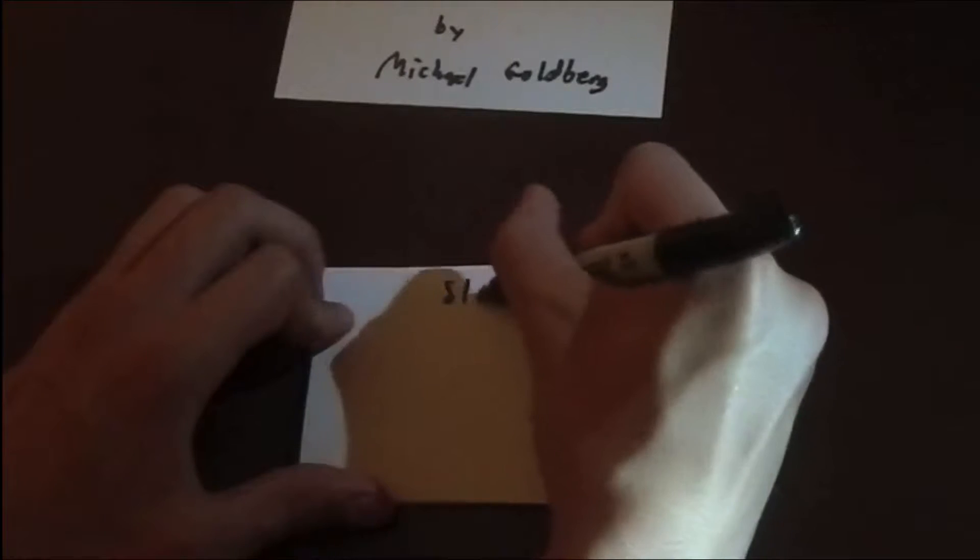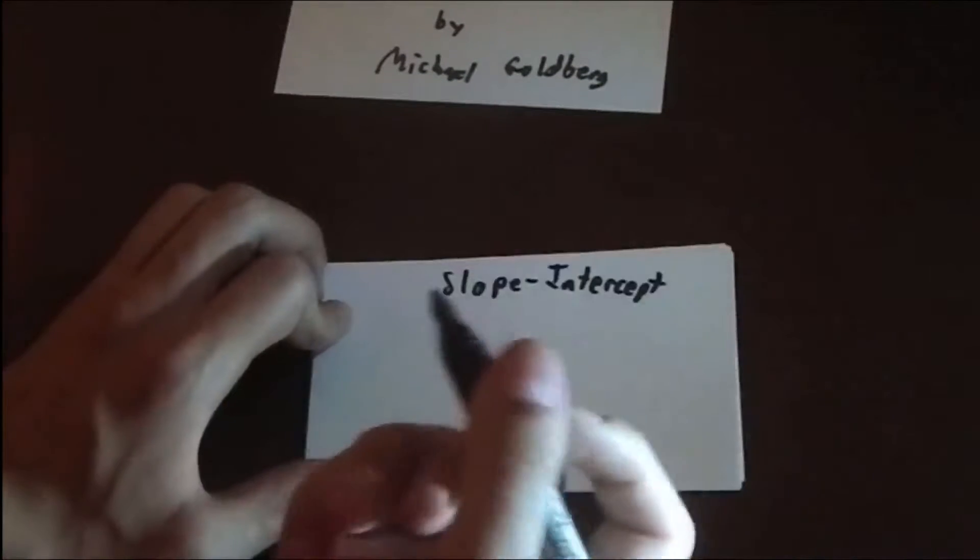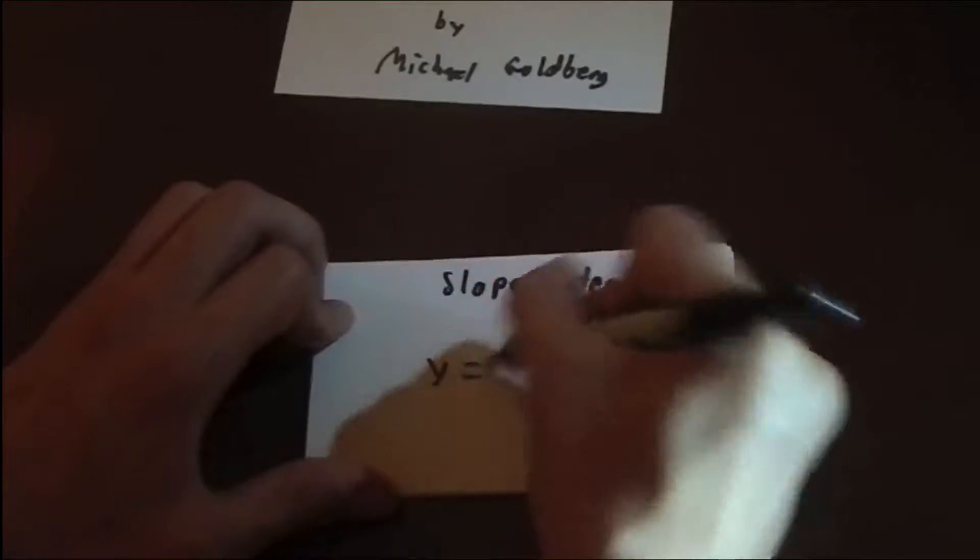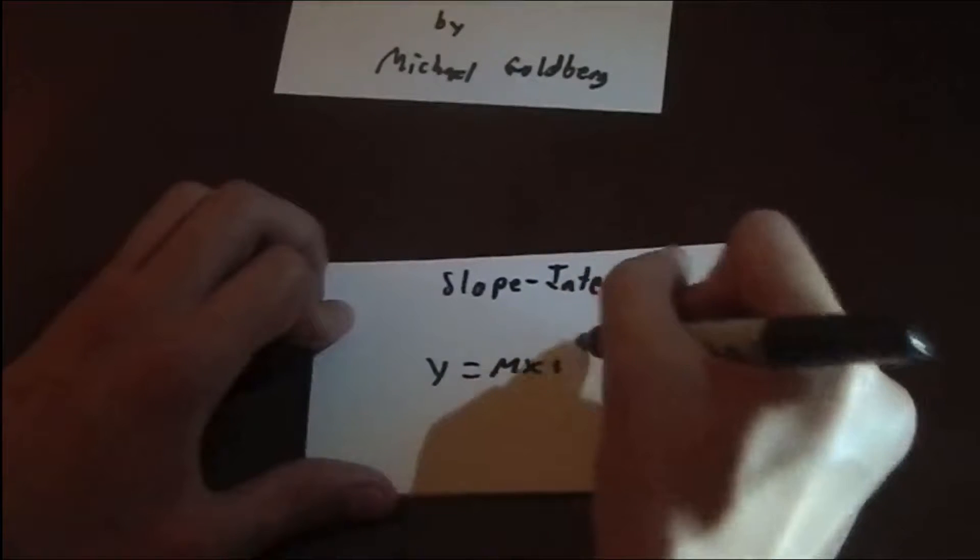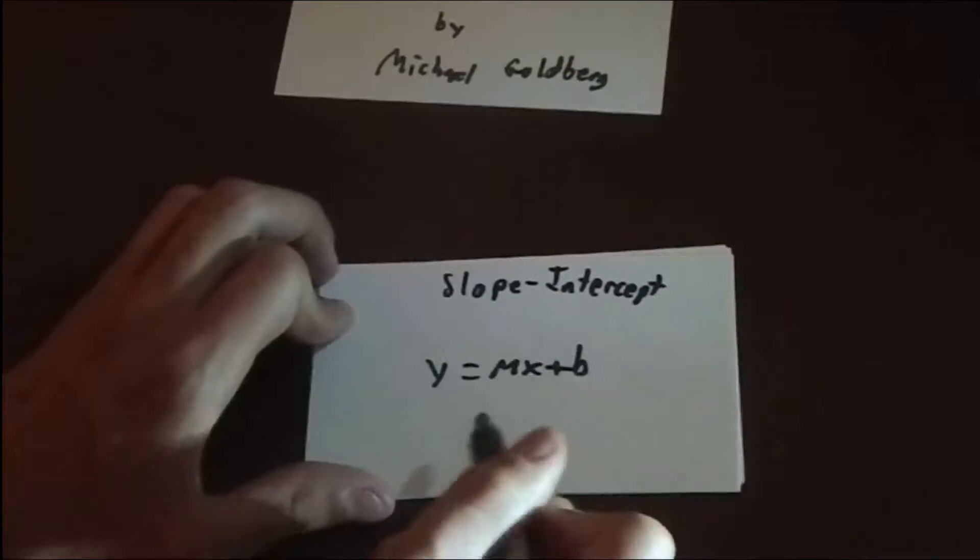Point-slope form is one of three different forms that you can write a linear equation in. One of the forms is slope-intercept, which is y equals mx plus b. b is the y-intercept, and m is the slope.